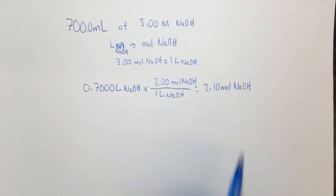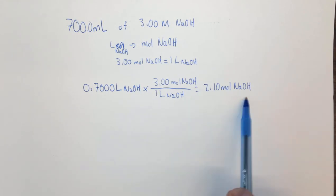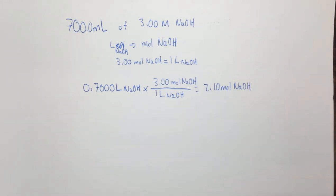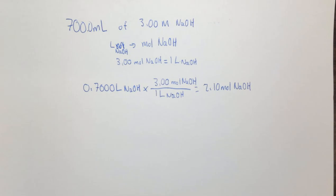This can be used in solution stoichiometry, because once we have moles of NaOH, if we have a balanced chemical equation we can convert to moles of something else, then to grams, or divide by the volume to find the molarity—depending on what the question asks. The last thing we're going to do in this chapter is look at two examples of solution stoichiometry.